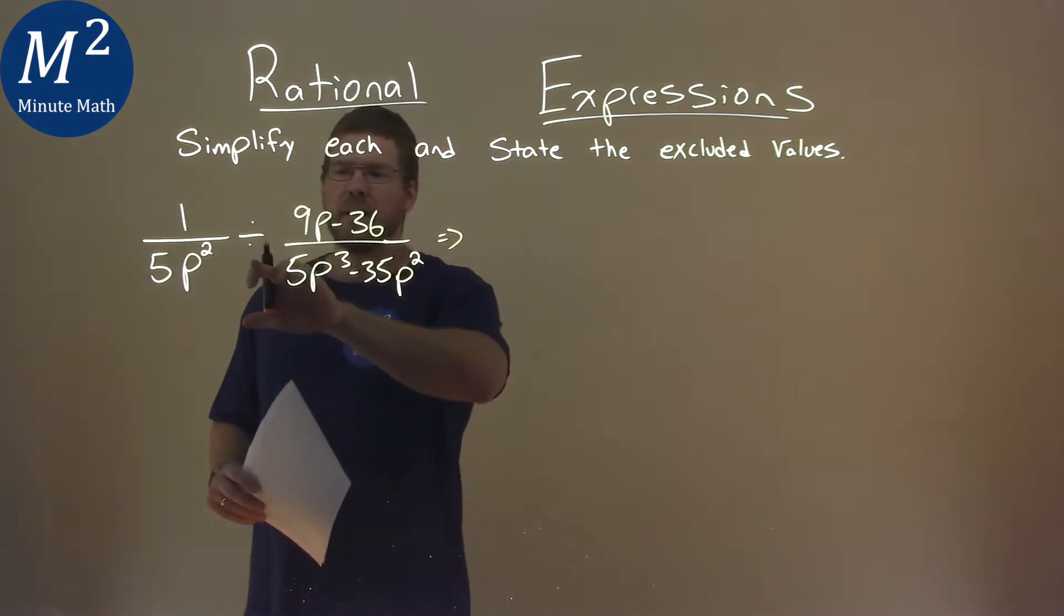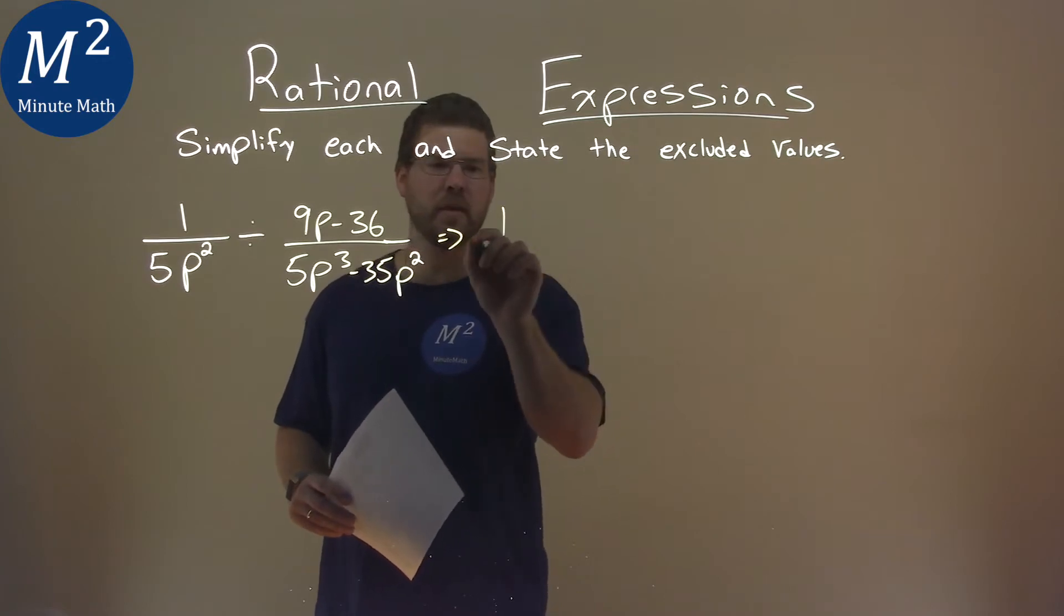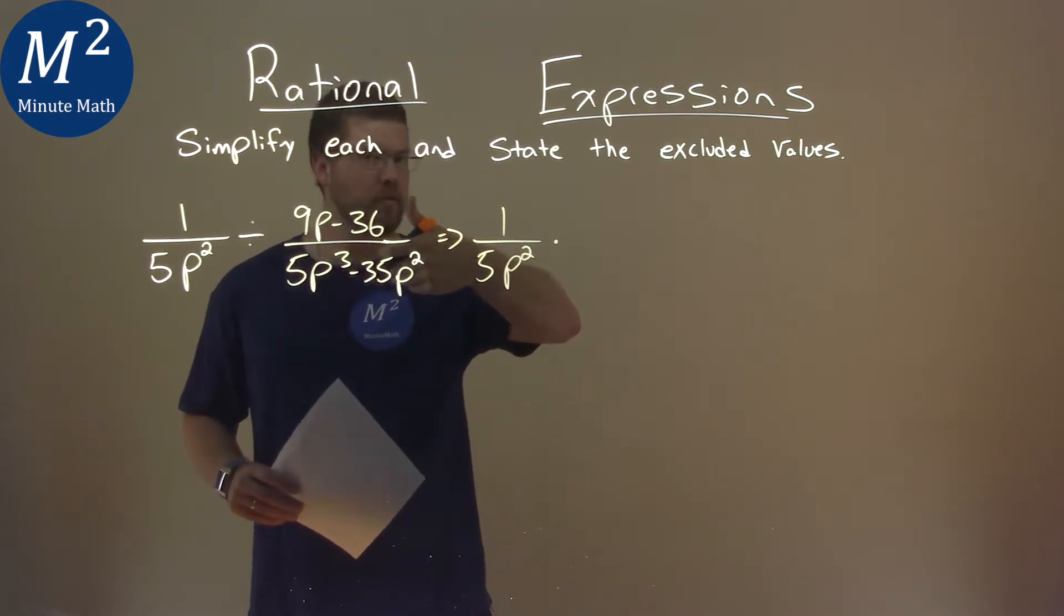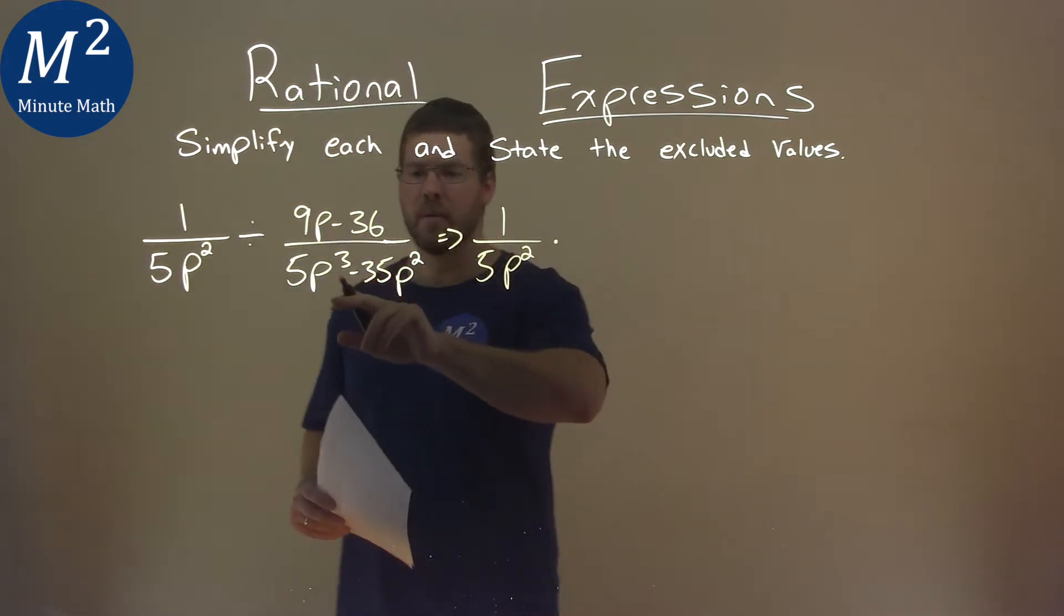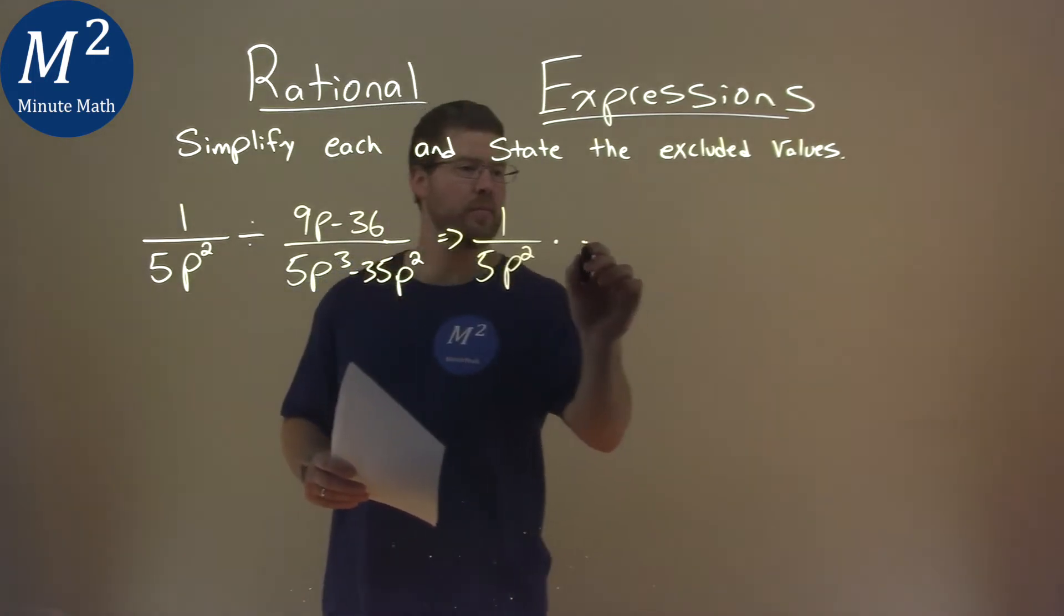Well, first thing is, I don't like to see a division with a rational expression, so let's make that multiplication. We have 1 over 5p squared, and we're going to multiply now, and we're going to flip this fraction, but as we do that, I'm going to pull out a 5p squared from the denominator, so let's go do that.